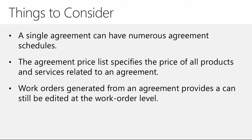The other thing to remember is that even though the agreement is really the framework for generating work orders, once the work order is created all of that information is still editable at a work order level. You might go in and add multiple products and services, and then modify the price list on the work order, or modify other additional information — as long as the person has the appropriate permissions to do so. It's really just a framework for generating the work order, but you still have the capabilities to modify and customize them as needed.